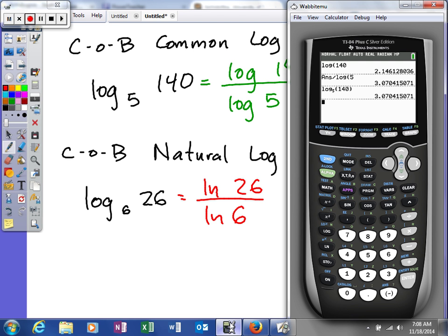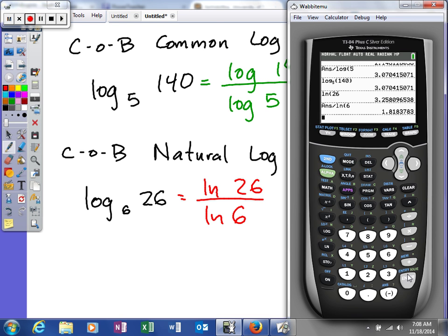So, yeah, let's see, natural log of 26 divided by the natural log of 6. So 1.818.